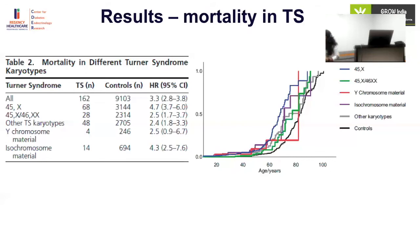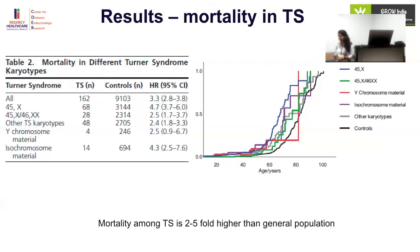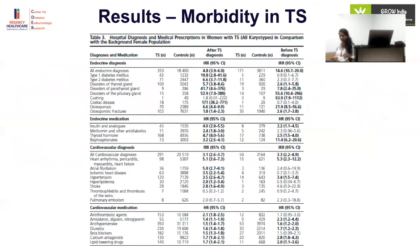From the survival data, Turner syndrome patients appear to survive up to around 50 years. Overall mortality is two- to five-fold higher in Turner syndrome compared to the general population. In terms of morbidity, hospital admissions due to endocrine and cardiovascular diagnoses are higher in Turner syndrome. The only conditions not substantially elevated are thromboembolism and pulmonary embolism — which is actually a key concern, since most studies have shown HRT is associated with high risk of thromboembolism.